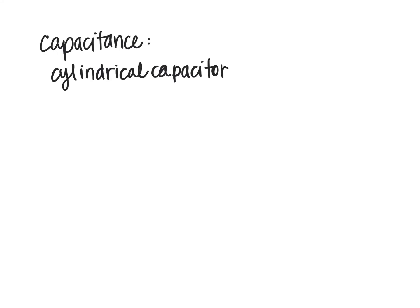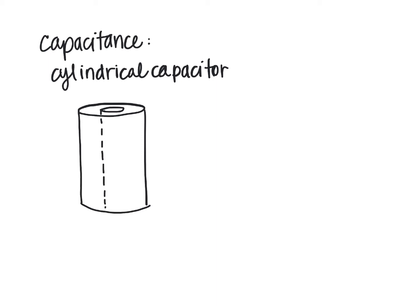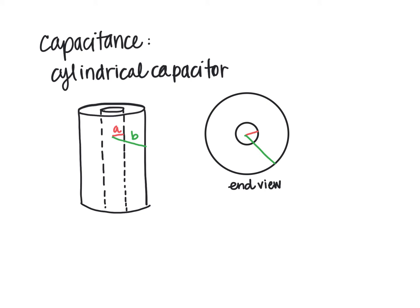Let's look at a cylindrical capacitor — a cylindrical conductor where there is an inner concentric cylinder inside. The inside radius is A and the outside radius is B. Looking at the end view, the red one is the inner radius A and the outer radius is B.